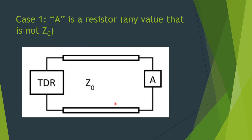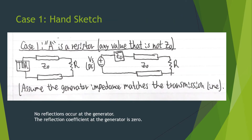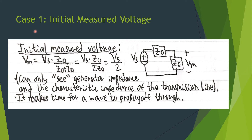In case one, we will analyze this circuit where A is a resistor of any value that is not Z0, the characteristic impedance of the transmission line. We assume that the generator impedance will match the transmission line impedance, so the reflection coefficient at the generator will be zero, meaning no reflections will occur at the generator. To get the initially measured voltage Vm, we use voltage division to calculate Vm equals Vs times Z0 over Z0 plus Z0, which equals Vs over 2. We do this because initially we can only see the generator impedance and the characteristic impedance of the transmission line, since it takes time for a wave to propagate through the line.